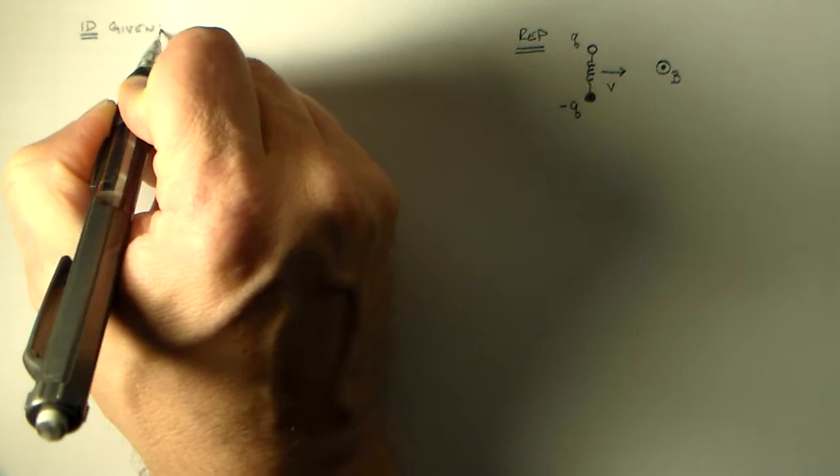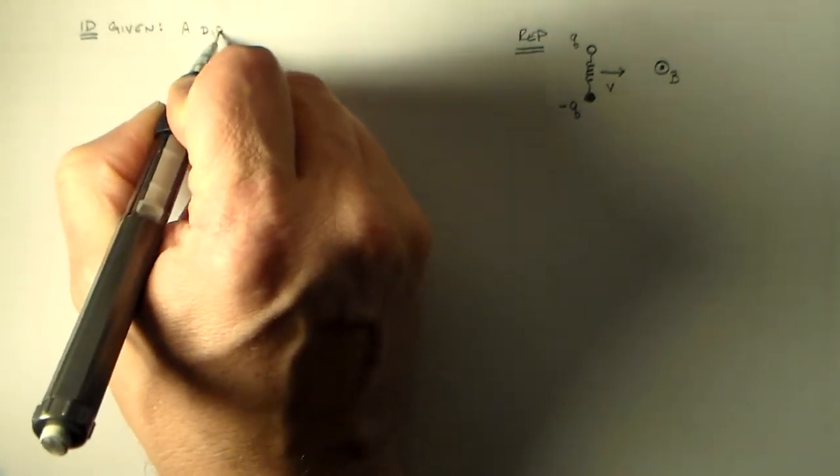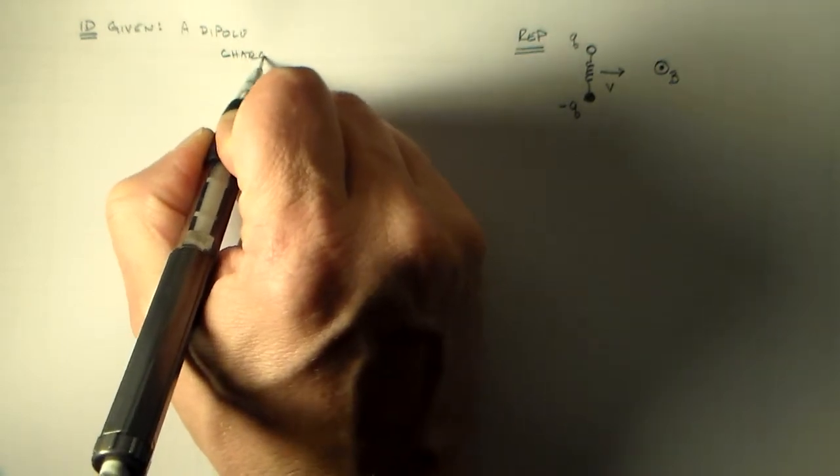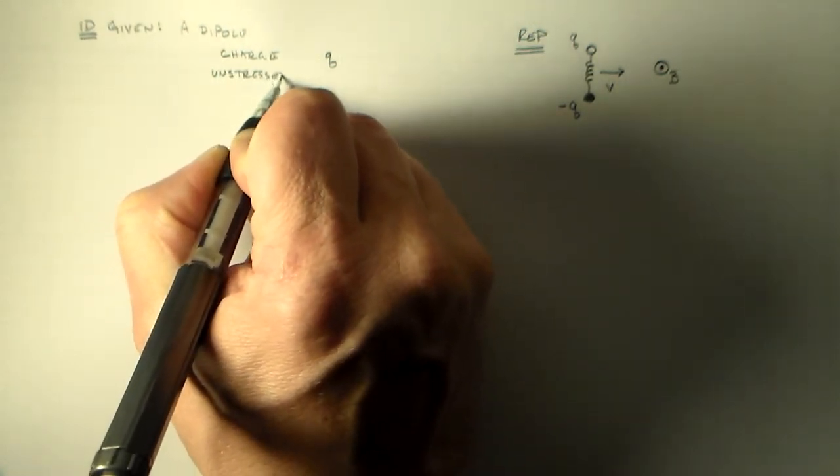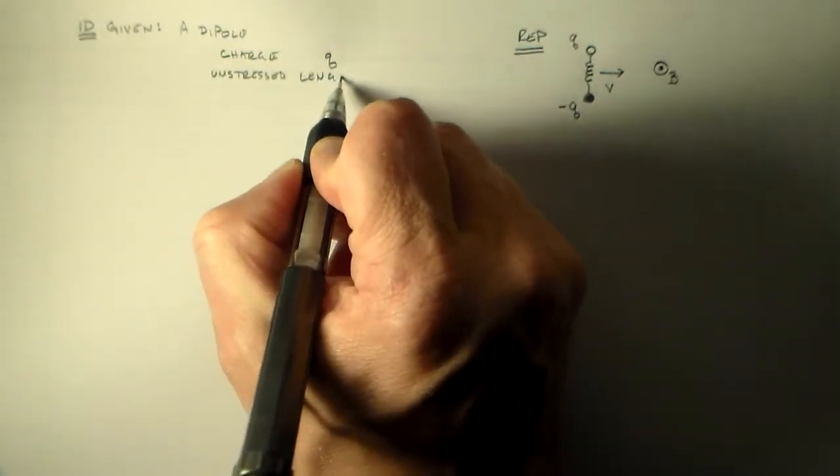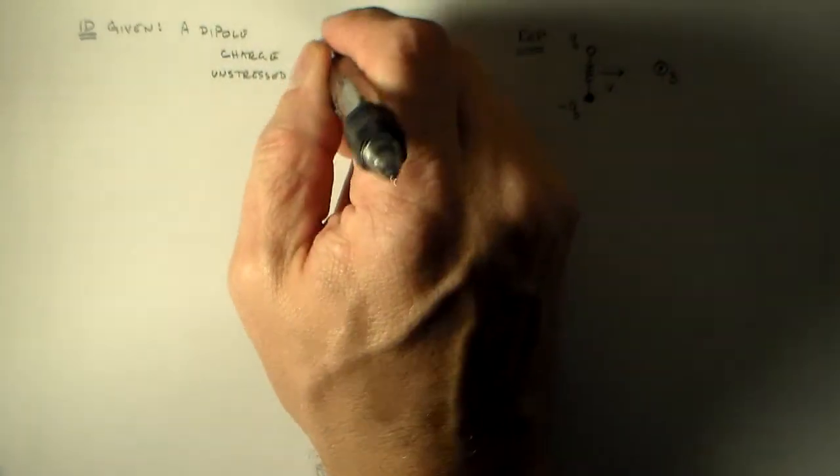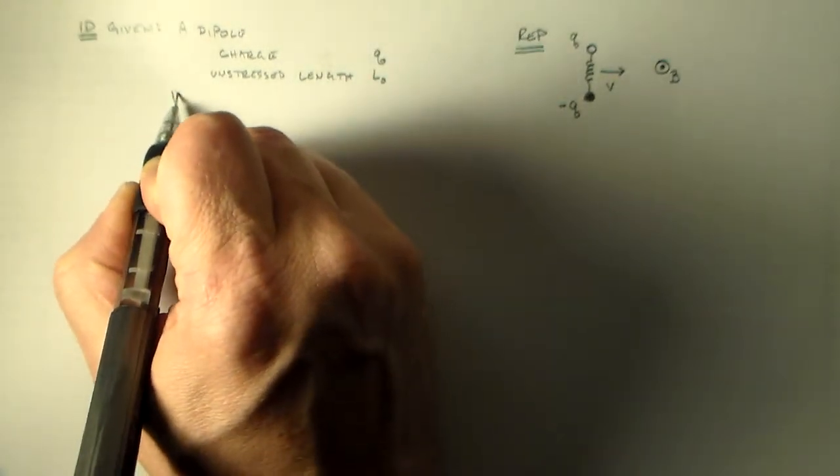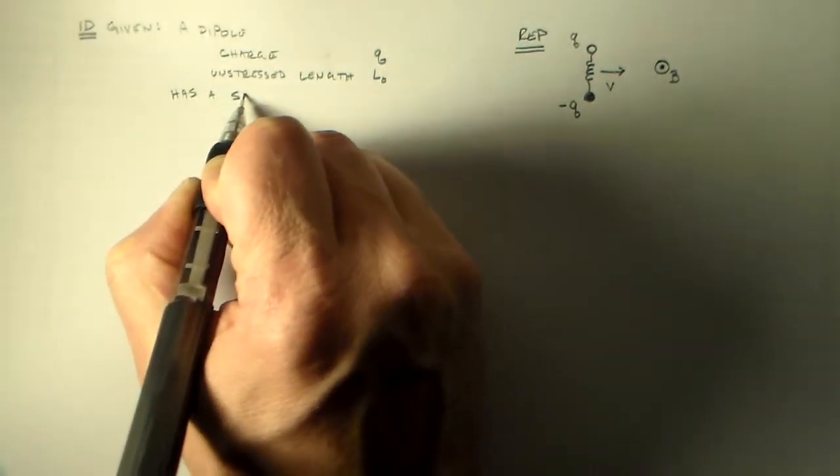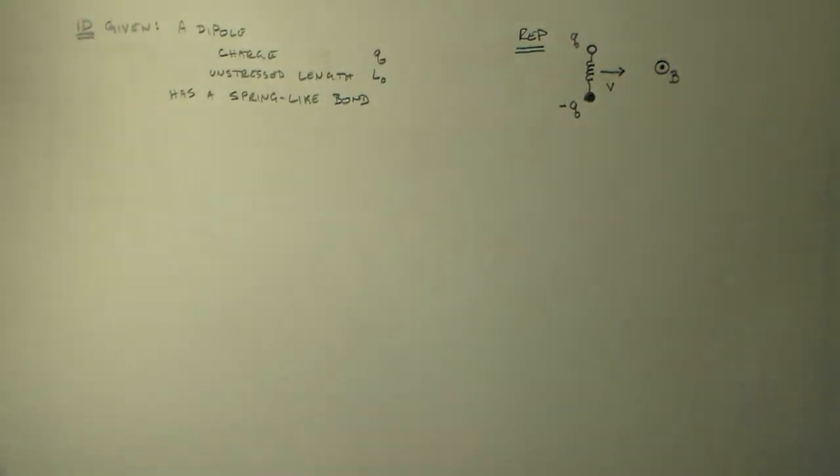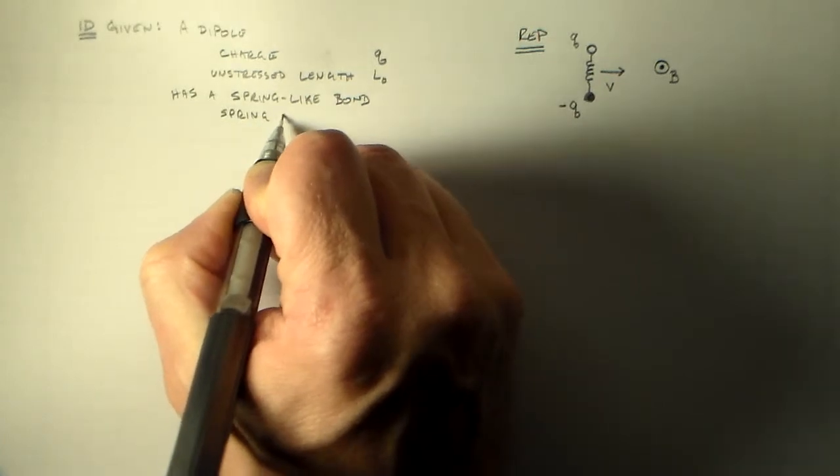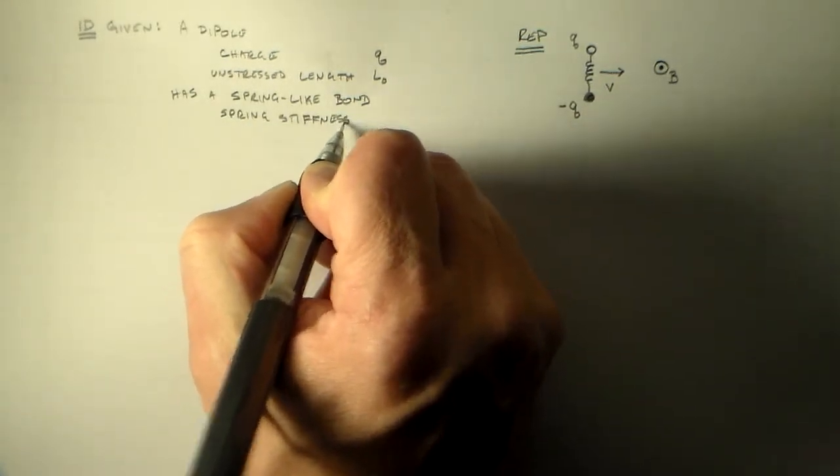All right, I said I was given a dipole. Okay, and it has a charge Q and an unstressed length. Maybe unstretched is better, but hey. L0. Put the Q out here. And it has a spring-like bond. It's not a spring, it's just going to act like a spring, okay? So it has a spring constant, a spring stiffness.